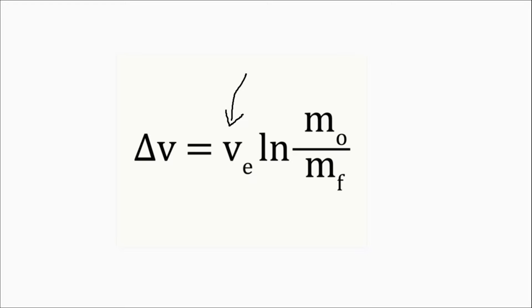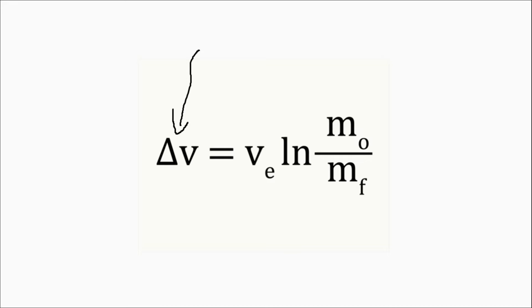We've got VE, which is the velocity of the exhaust, or how fast those hot gases are escaping out of the back of the rocket. And finally, probably most importantly, is delta V.